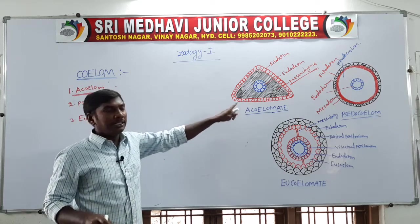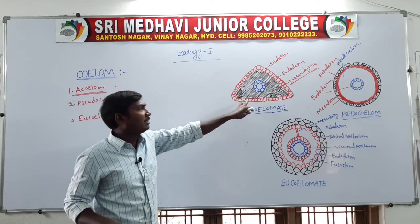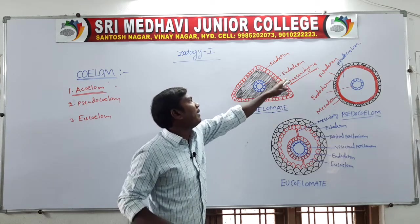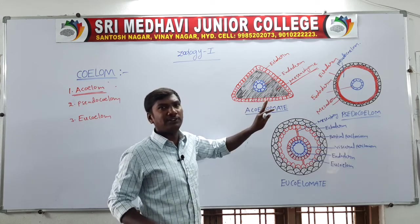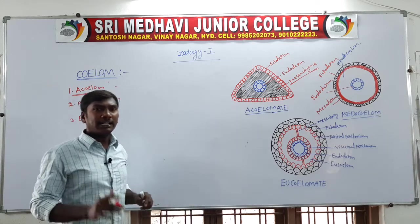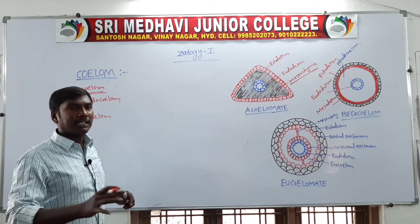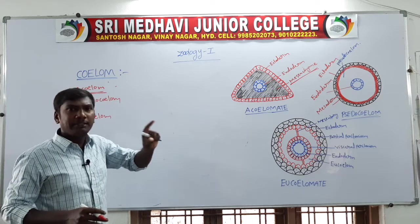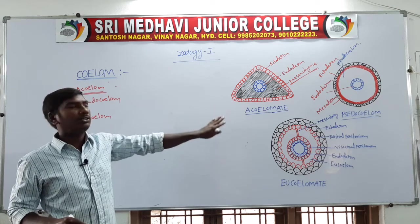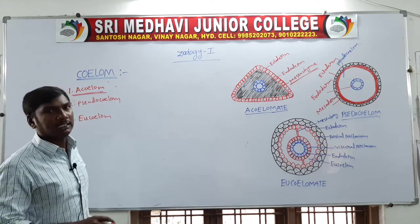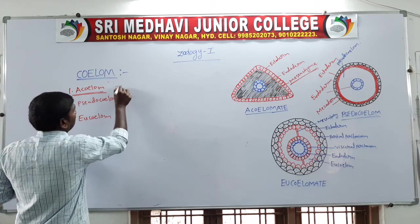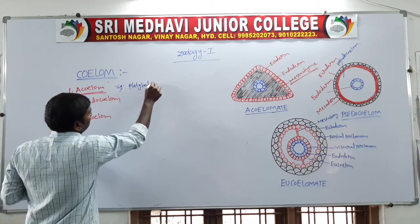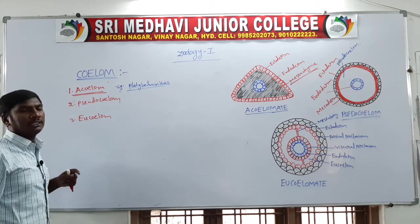In acoelomates, the mesoderm is derived from mesenchyme, and the entire space between the body wall and visceral organs is occupied by mesenchyme. There is no body cavity. 'A' means absent — acoelomate means coelom is absent. Example: Platyhelminthes.